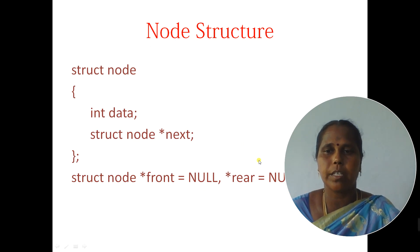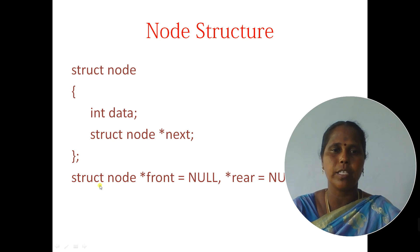In Queue, each node has two parts. One is the data part and another one is the link part. Initially, the front and rear pointers are set to null, which means initially the Queue has no elements in it. Here I have initialized both the front pointer and rear pointer as null.